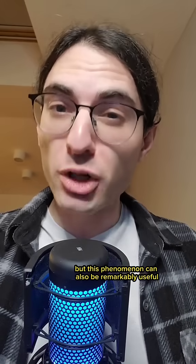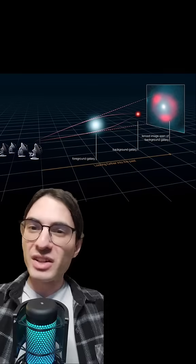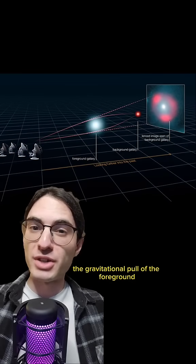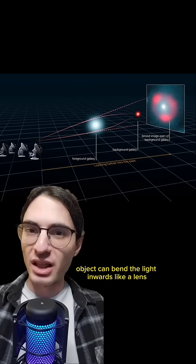But this phenomenon can also be remarkably useful when we're lucky. When a distant object is behind a massive galaxy or galaxy cluster, the gravitational pull of the foreground object can bend the light inwards like a lens.